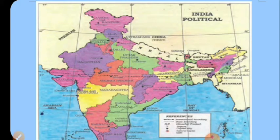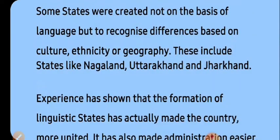You can see the Indian political map of that era based on language in your book. Some states were created not on the basis of language but to recognize differences based on culture, ethnicity, or geography. These include states like Nagaland, Uttarakhand, and Jharkhand, which have different cultures, different ethnicity, and different geography from other states.